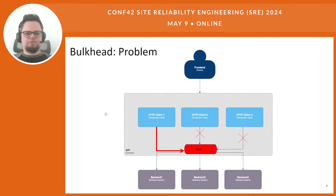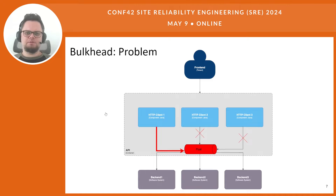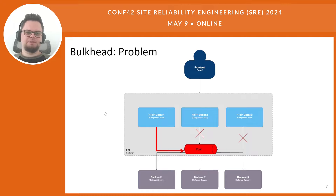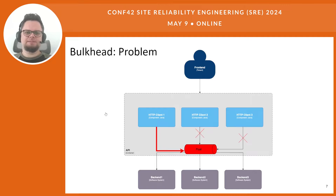What will happen if one of those backends experiences some sort of problems resulting in high request latency, for example? Due to high response time, the entire connection pool will be completely filled by requests awaiting responses from backend 1. Requests to healthy backend 2 and backend 3 won't be able to be sent because the pool is exhausted. So, a failure of one backend results in a failure across the entire functionality of our application — but we don't want that.